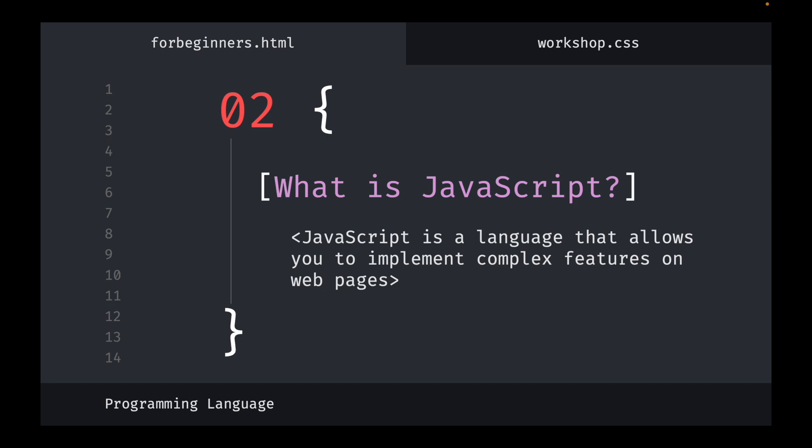JavaScript is often abbreviated as JS, so files with a .js extension are JavaScript files. It can change both HTML and CSS, and it can calculate, manipulate, and validate data. JavaScript's main use is for websites, and it can be used for both the front end and the back end.